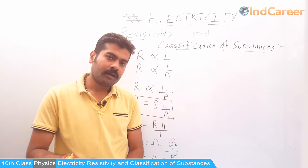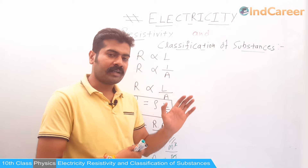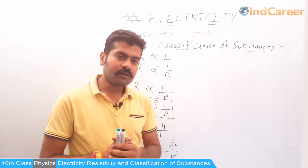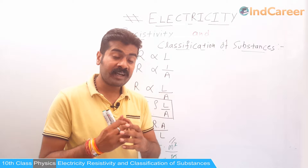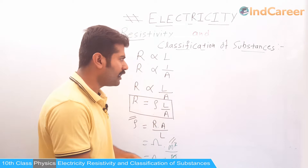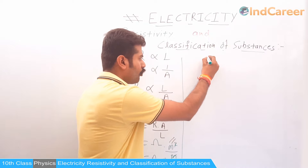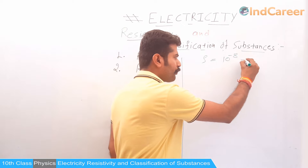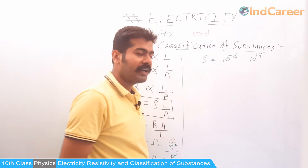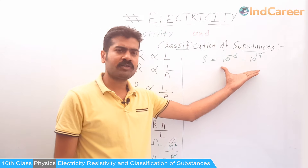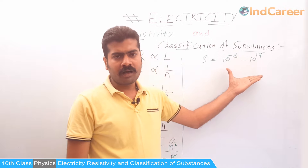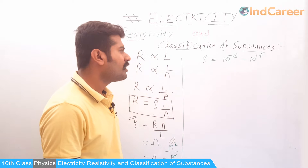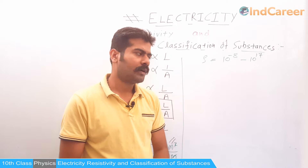Now, can we classify different substances based on the value of resistivity? The value of resistivity varies over a very wide range — from as low as 10 to the power minus 8 up to 10 to the power 17. Broadly, we can classify three types of substances. The first one is metals.